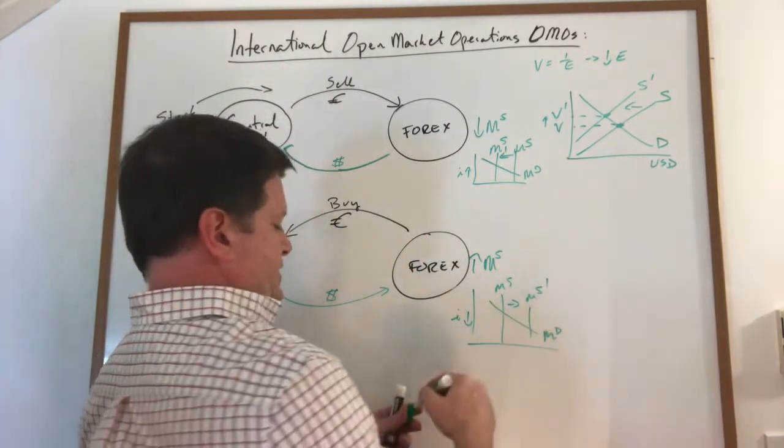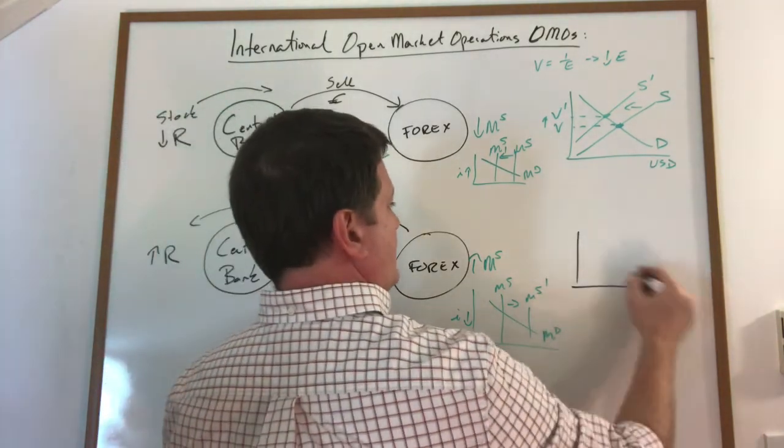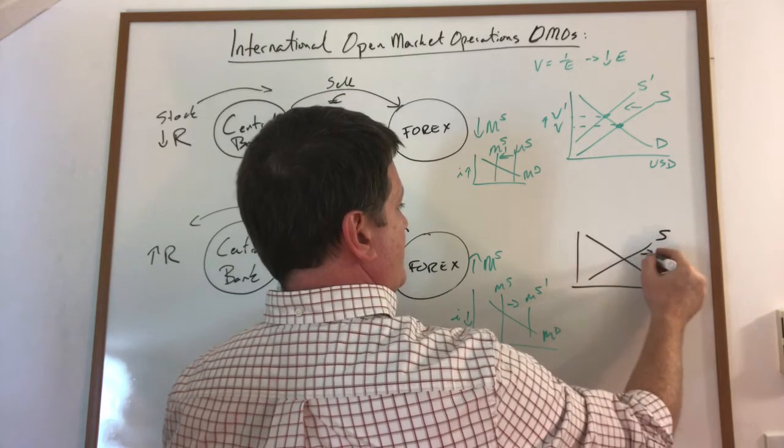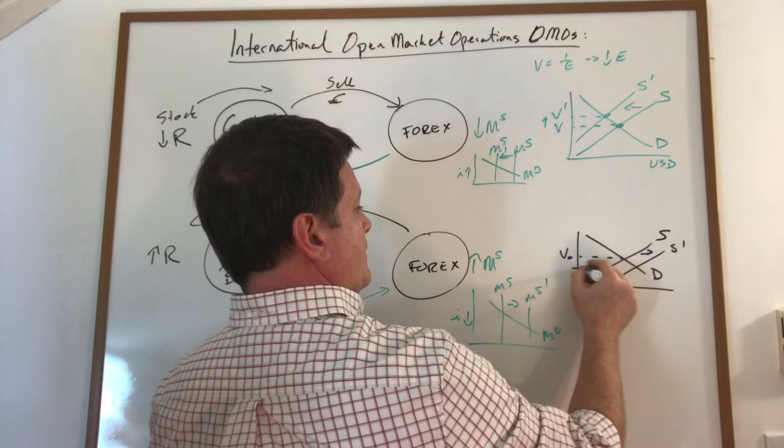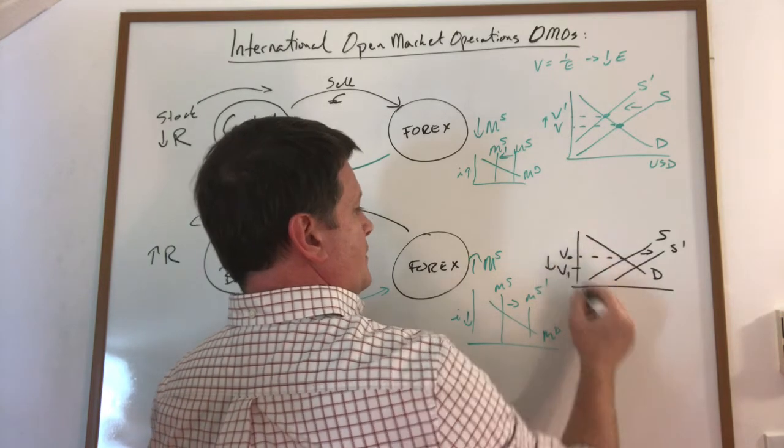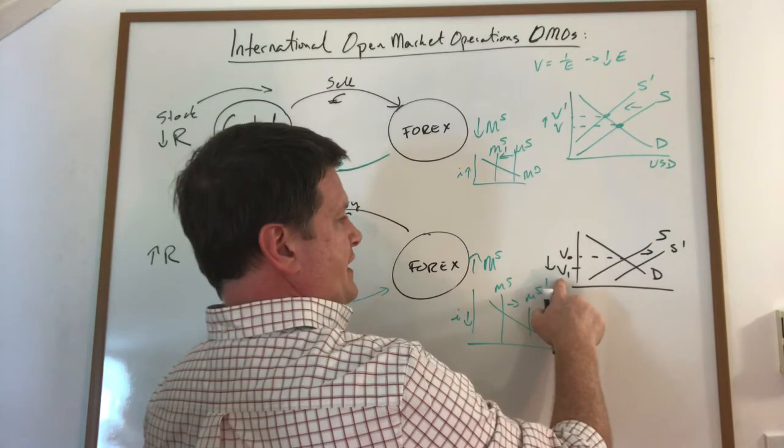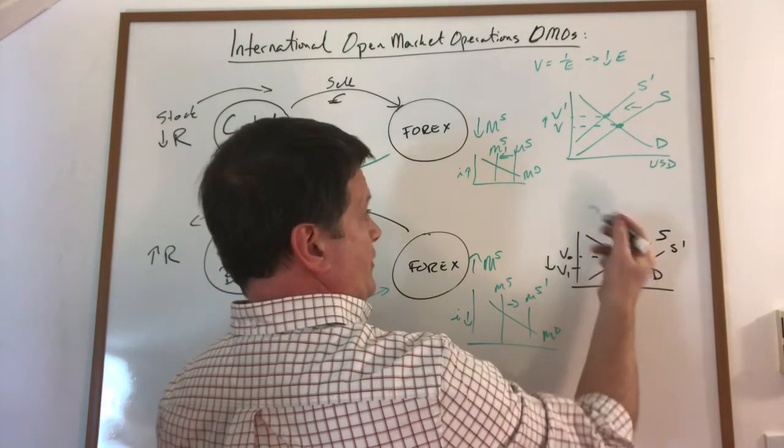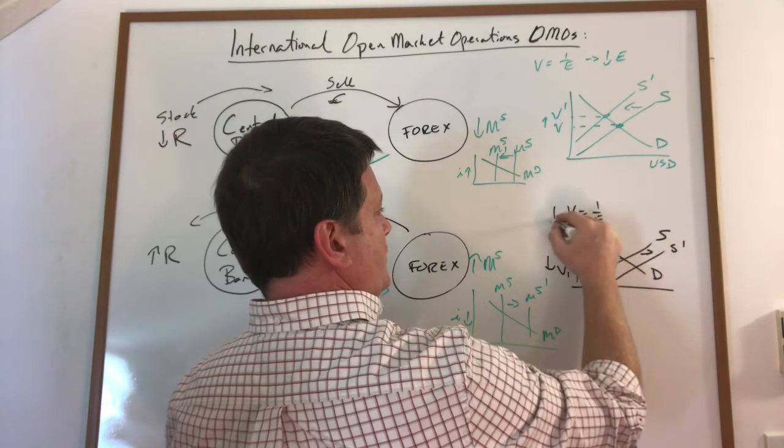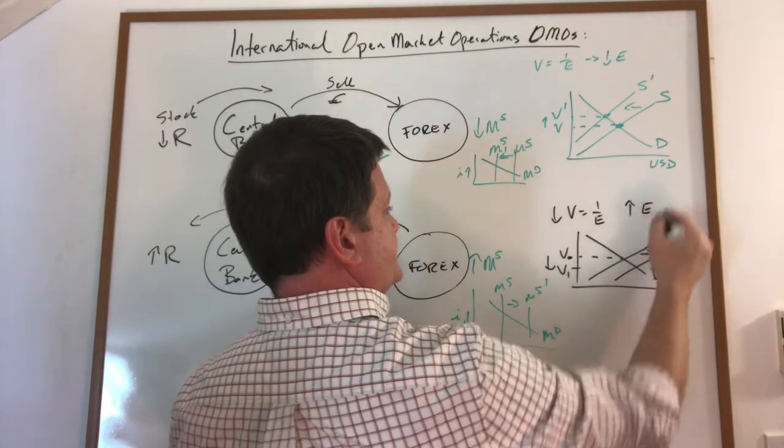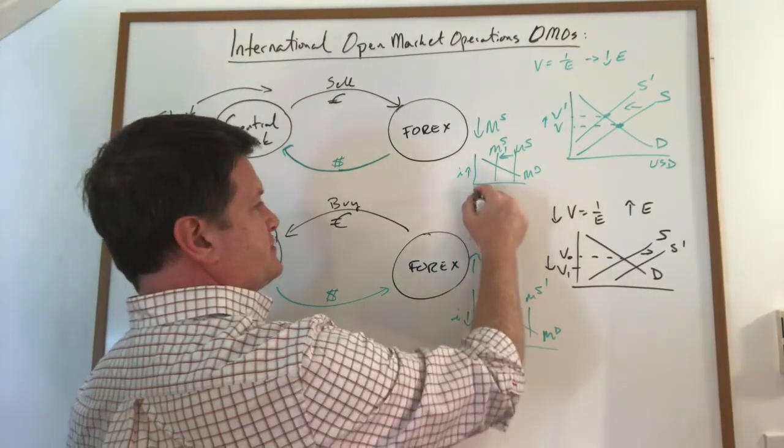And this action here will increase the supply of our currency on global markets, lowering its value. V is one over E, so a lower value means a higher exchange rate. We could get that here too, this increase in the interest rate.